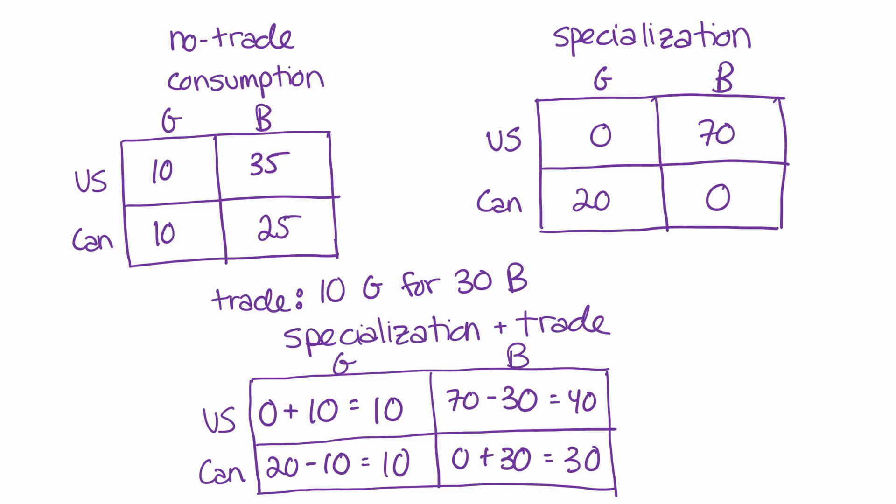And now if we compare these numbers to the no trade consumption numbers, we actually can conclude that both parties are better off. Because like before, both countries have consumption of 10 guns, so they're not giving up anything in terms of guns. But now both countries have more butter than they had before.